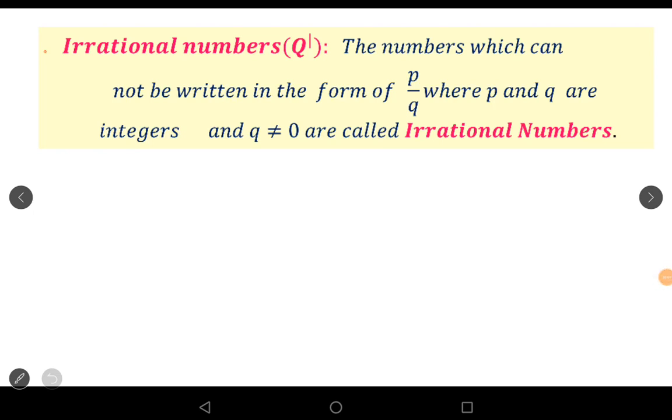Irrational numbers. The numbers which cannot be written in the form of p by q, where p and q are integers and q not equal to 0, are called irrational numbers.